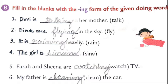Let's see exercise B on page number 62: fill in the blanks with the ing form of the given doing words. The doing words are already given in brackets — you just add ing. The first one: Devy is dash to her mother — talk is given in the bracket, add ing, so it becomes Devy is talking to her mother. Birds are dash in the sky — fly is there, add ing, it becomes flying — birds are flying in the sky.